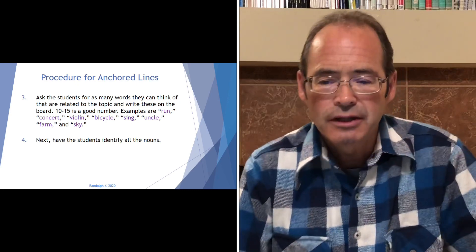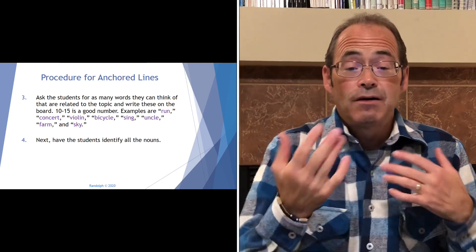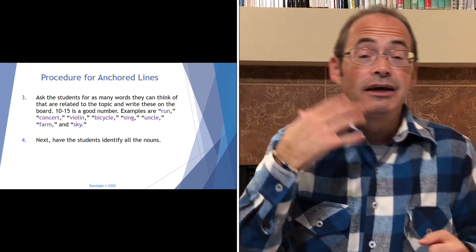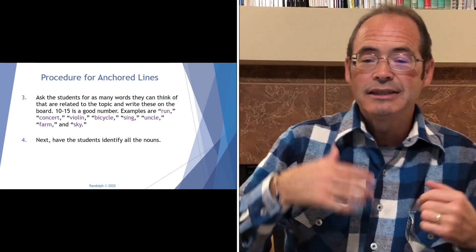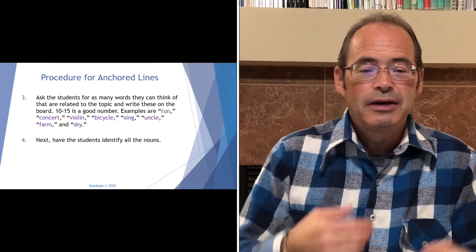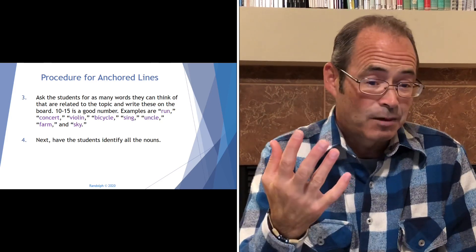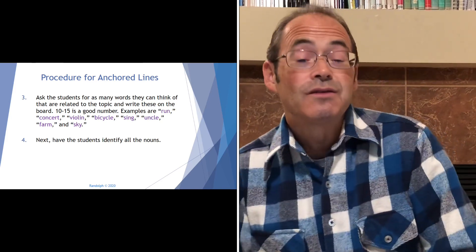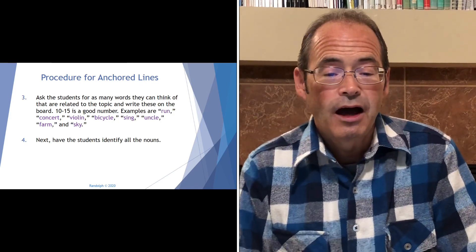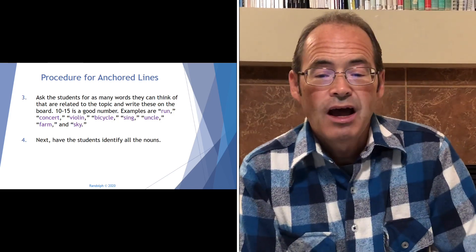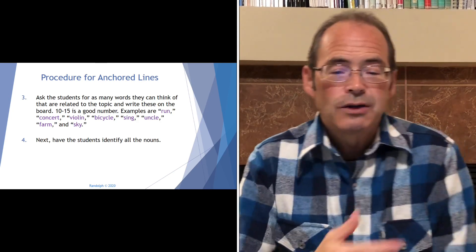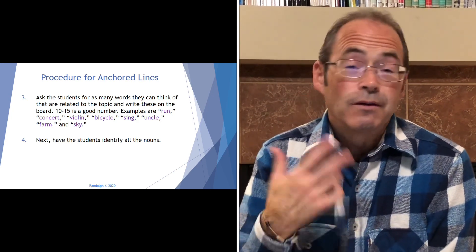Step three: ask the students for as many words as they can think of related to the topic and write these on the board — 10 or 15 is a good number. Examples for our poem are: run, concert, violin, bicycle, sing, uncle, farm, and sky. Next, have the students identify all the nouns. As we can see, most of those are nouns — even 'run' as in 'I went for a run.' All of those are really nouns except for 'sing.'